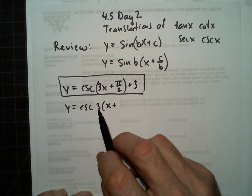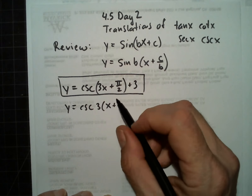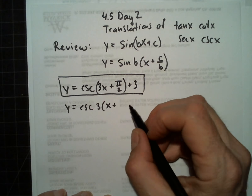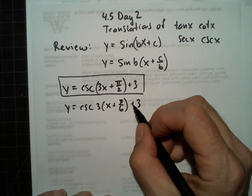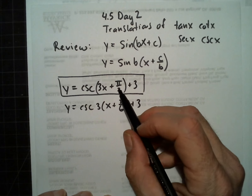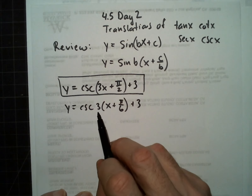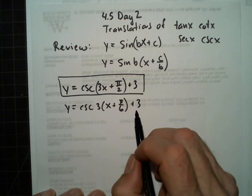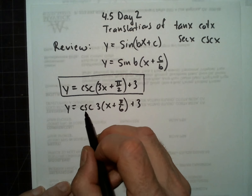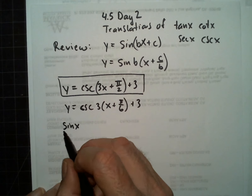If we multiply 3 times something, it has to give us pi over 2. So that means we took a 3 out of the numerator and we should put a 3 in the denominator. If you go 3 times pi over 6, it'll be pi over 2, so we know this is correct. Then we know that here's a horizontal dilation, horizontal translation, and vertical translation. We're going to use cosine instead of cosecant, so let's look at the parent function for sine.